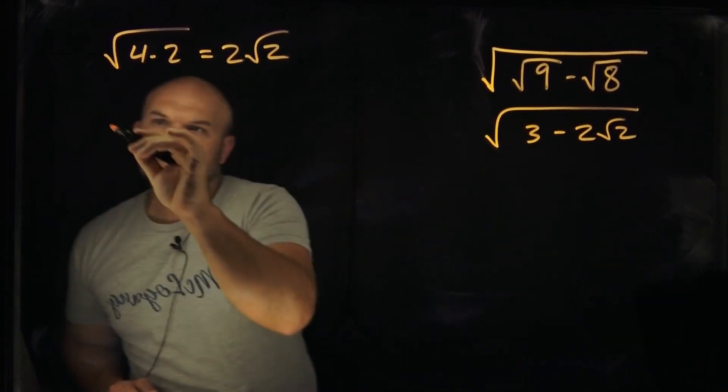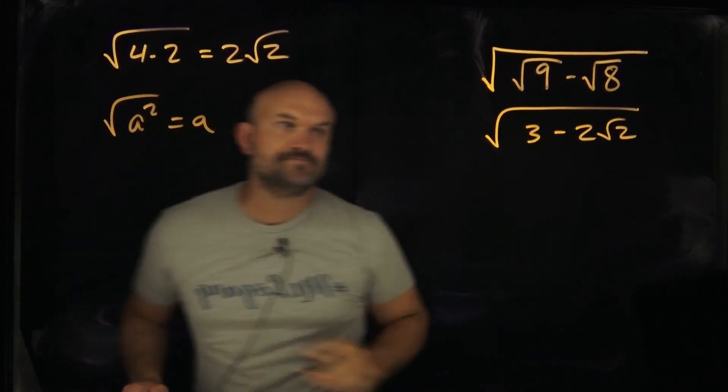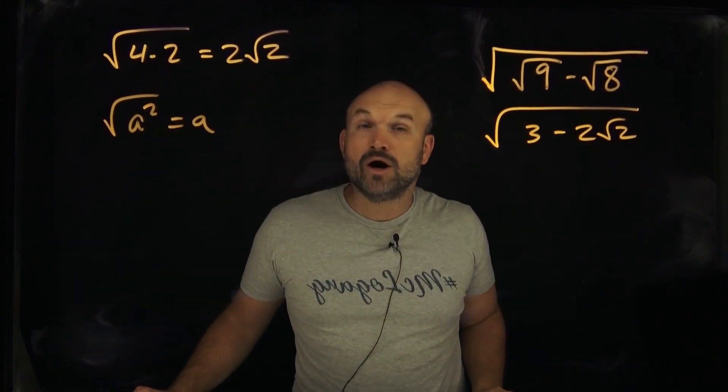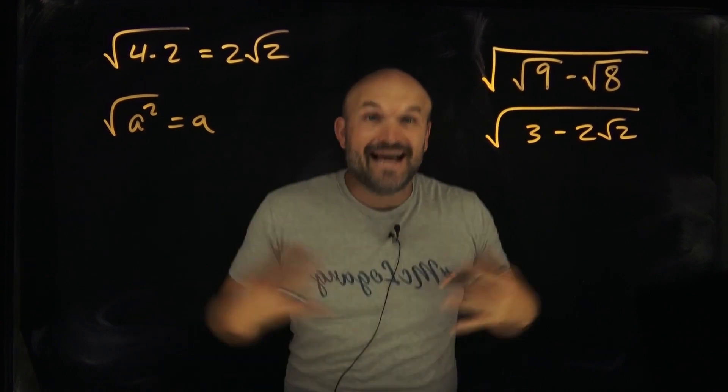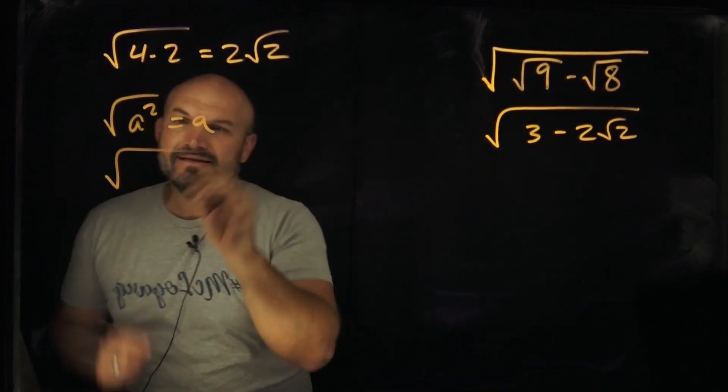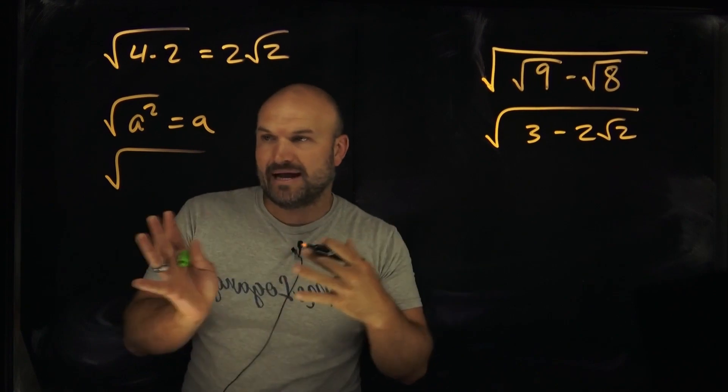Well, we know we can take the square root of a square number, right? Square root of a squared, it's just going to be a. What else can we take the square root of? Well, we can take the square root of really anything that's squared, if it is all by itself or separated by multiplication.